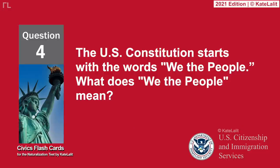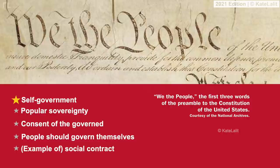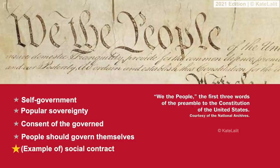The U.S. Constitution starts with the words "We the People." What does "We the People" mean? Self-government. Popular sovereignty. Consent of the governed. People should govern themselves. Example of social contract.